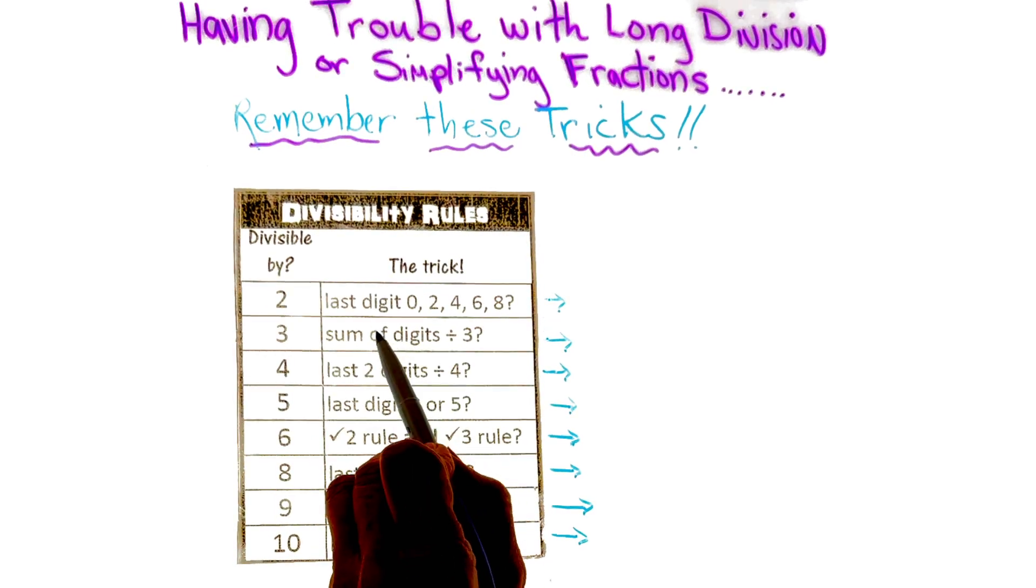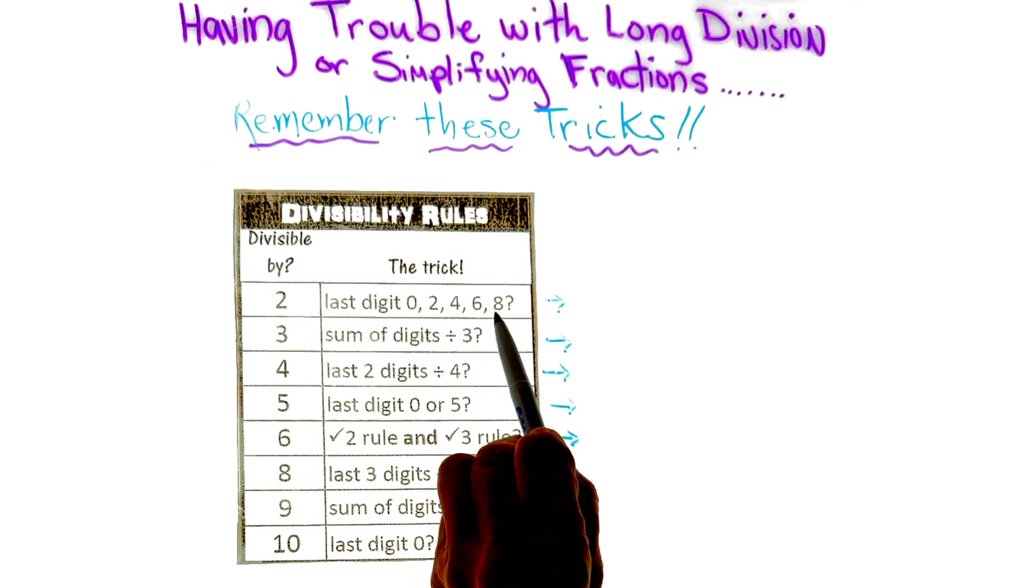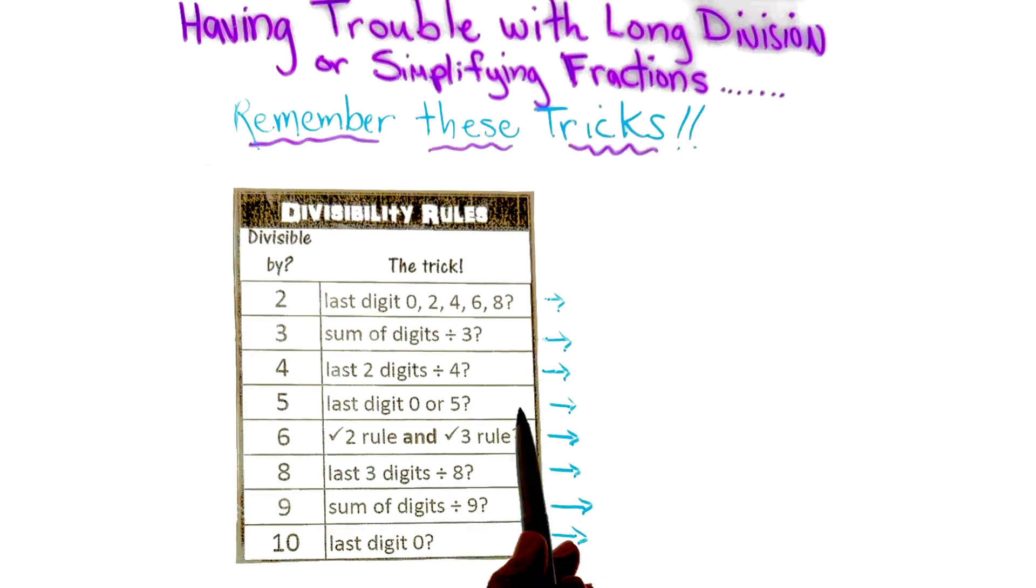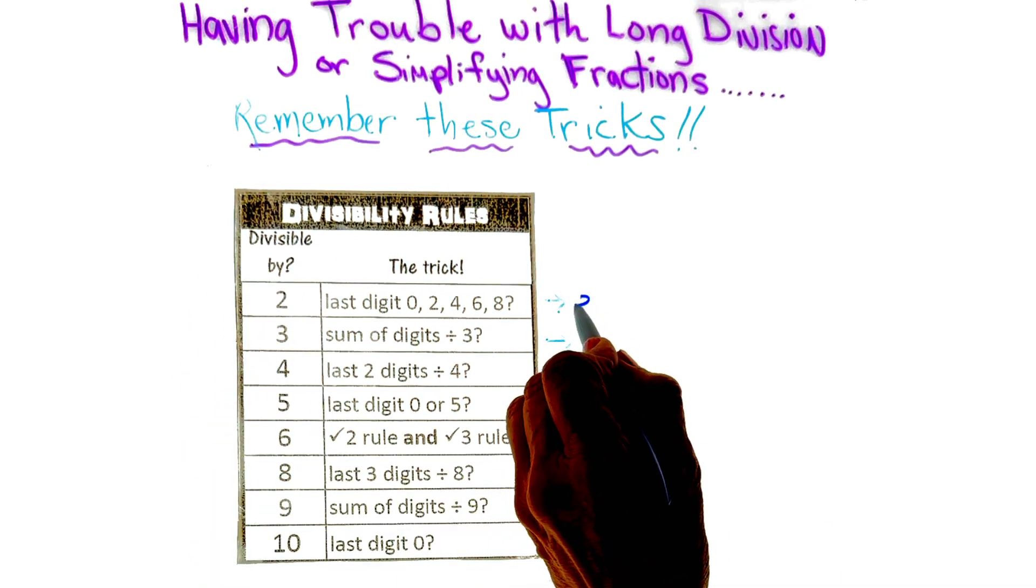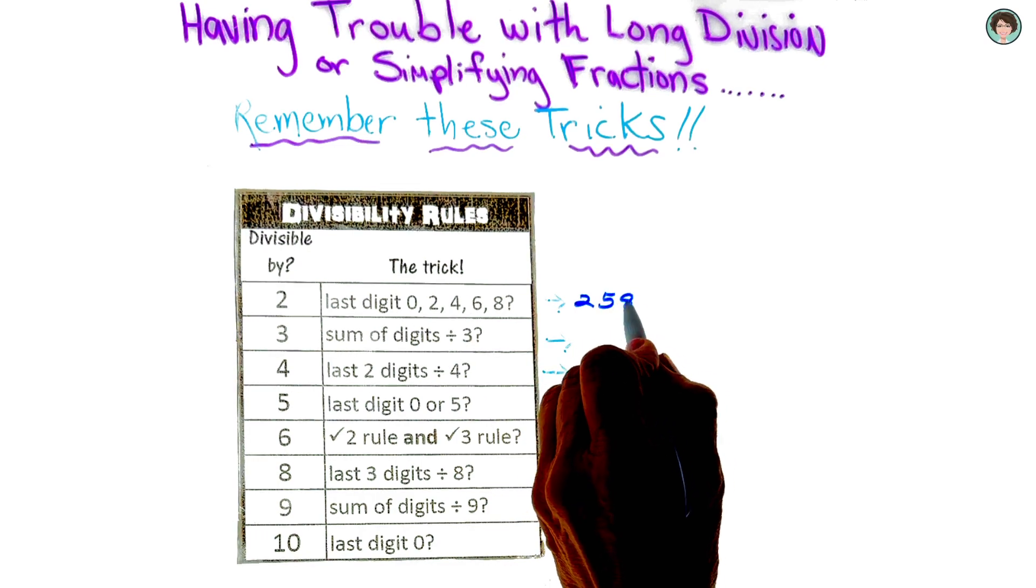If the number, the last digit is 0, 2, 4, 6, 8, yes, if it's even, we know that it's divisible by 2. So 258 would be a good example.